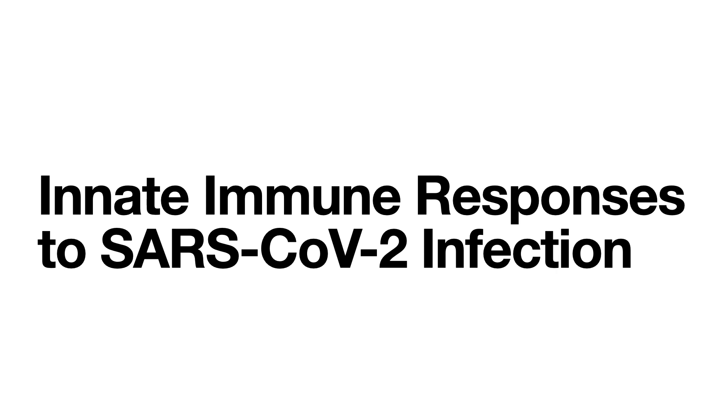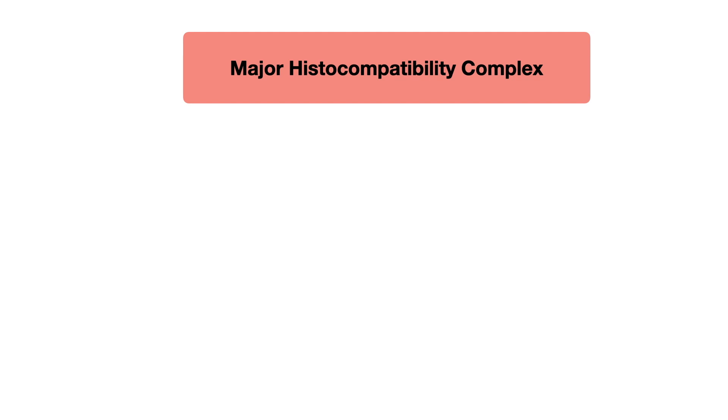Let us look into the innate immune response to SARS-CoV-2 infection. Before that, let's briefly discuss the major histocompatibility complex (MHC). These are proteins present on the cell surface that help identify foreign proteins from self-proteins. HLA is the MHC present in humans.